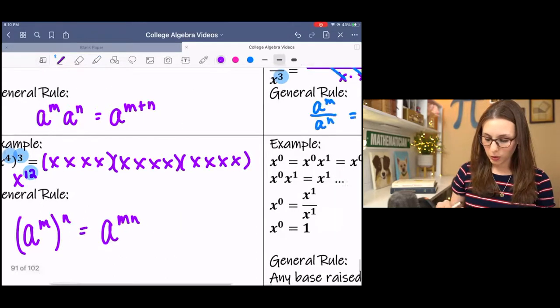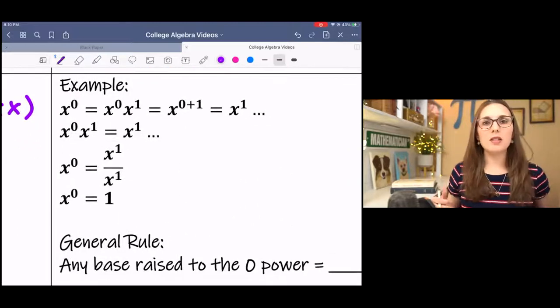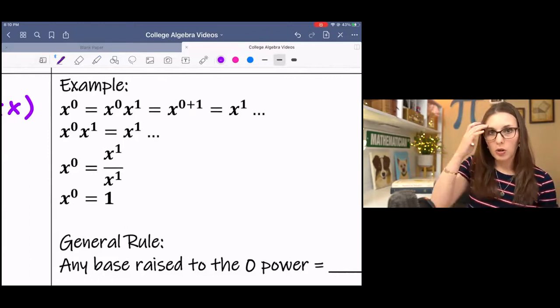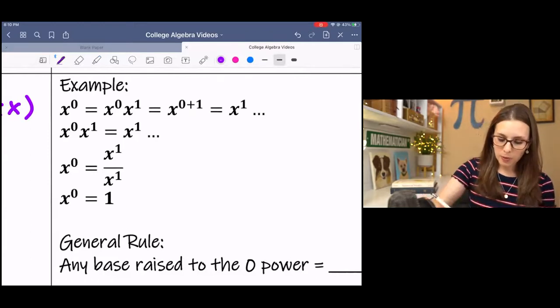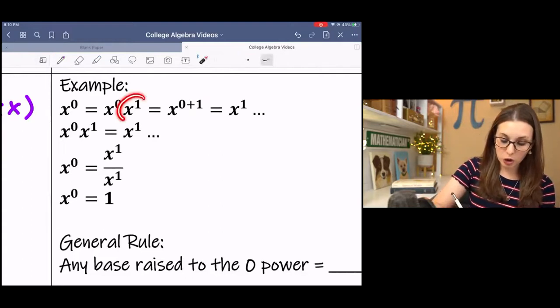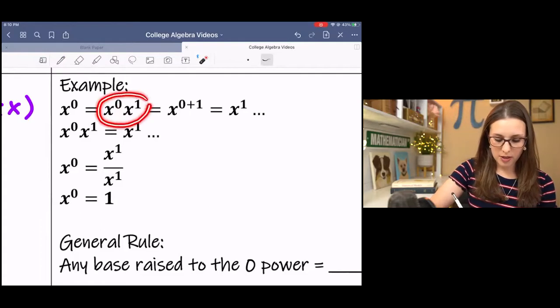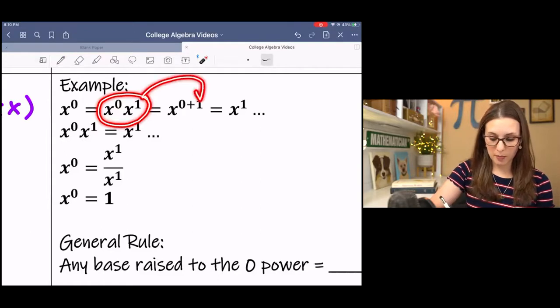The second to last one is really cool. We have x to the 0. x to the 0 is not 0. Let's say for the sake of this lesson, we don't know what it equals. If I multiply it by something that I do know, then I can simplify this piece using my properties. I have the same base being multiplied, so that means I'm actually adding their exponents. And 0 plus 1 is 1.